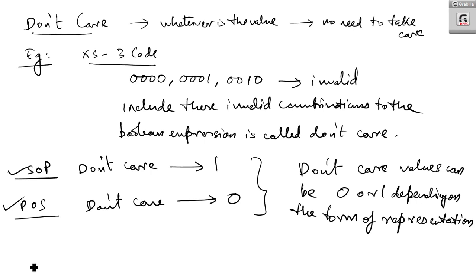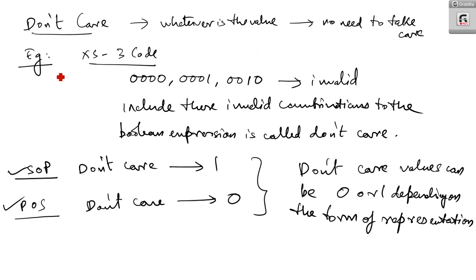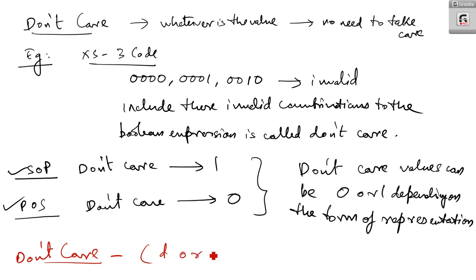These don't care combinations are generally designated by the letter D, or it can be phi, or in some cases X. With that brief introduction, let me move into a simple problem: how to reduce an expression which has a don't care combination.